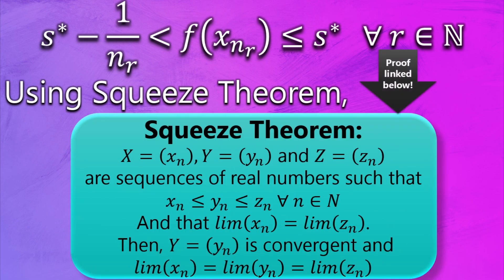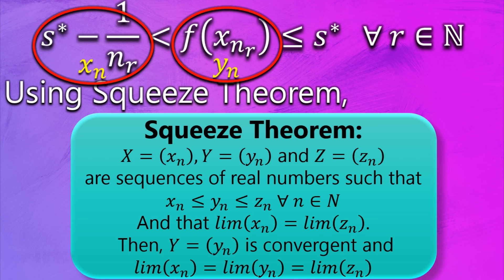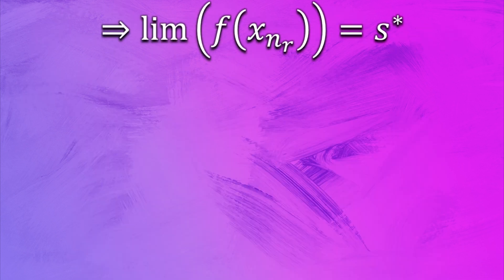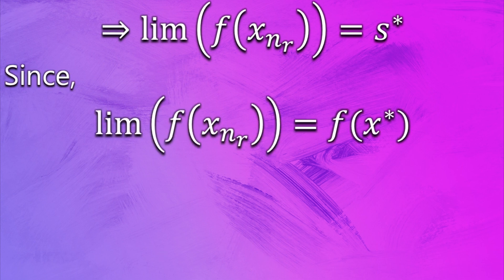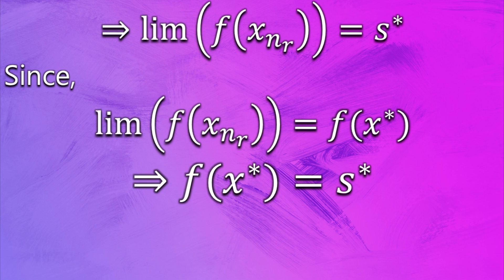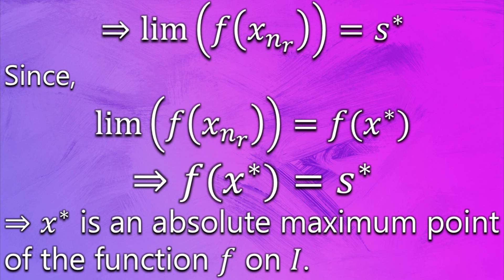So this implies lim f(x_{n_r}) is equal to s*. But as we have already proved that the limit of f(x_{n_r}) is equal to f(x*), so this implies that f(x*) is actually the supremum of f(x), proving that x* is an absolute maximum point of the function F on I.